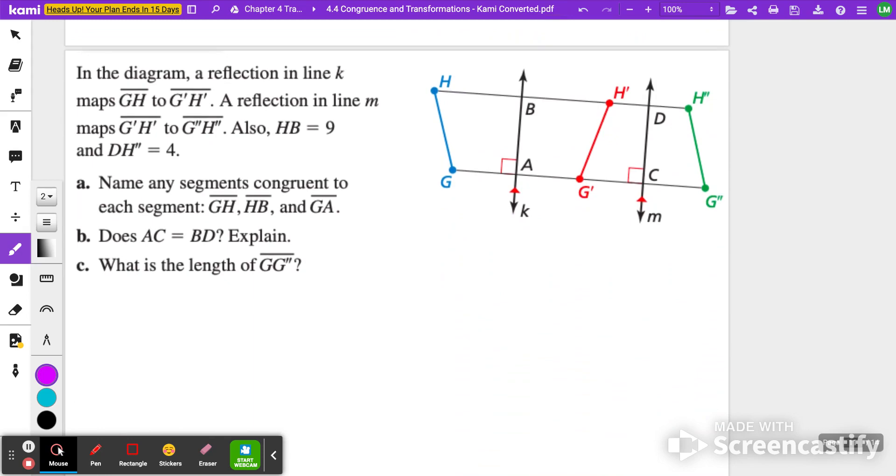Let's go ahead and try this one. So this is on the back of your paper that was given to you in class. And it says in the diagram, a reflection in line K maps GH to G prime H prime. And a reflection in line M maps G prime H prime to G double prime H double prime. Also HB is equal to nine. So from H to line B is equal to nine. And D to H double prime is equal to four. Name any segments congruent to each segment, GH, HB, and GA.